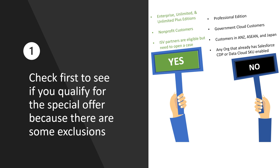Number one, before you get too excited, check to see if you qualify for the special offer, because there are some exclusions. If you already have the CDP or Data Cloud SKU enabled, if you are a customer in certain countries, if you have the professional edition of Salesforce, or if you are a government cloud customer, then unfortunately you don't qualify. Everyone else is good to go, although ISV partners will need to open a case to get access to the Data Cloud.